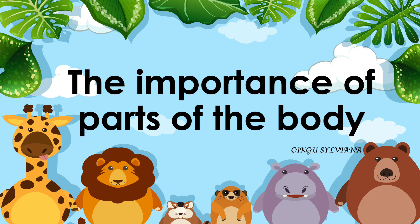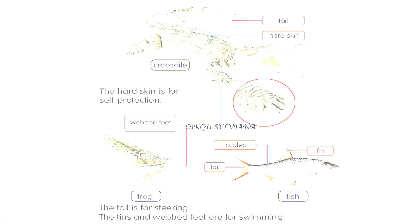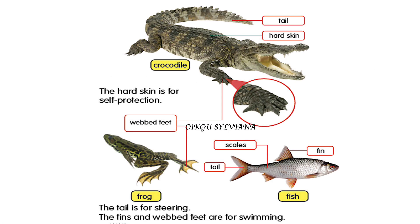Now, let's take a look at the importance of parts of the body of an animal. We have crocodile, frog, and fish. Crocodile has tail, hard skin, and webbed feet. Same as frog — frog also has webbed feet. What is the function of having webbed feet? Webbed feet help the frog and crocodile to swim better.